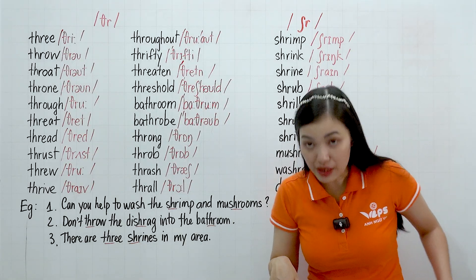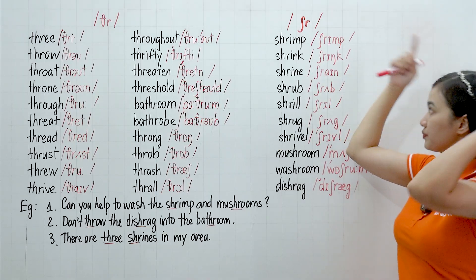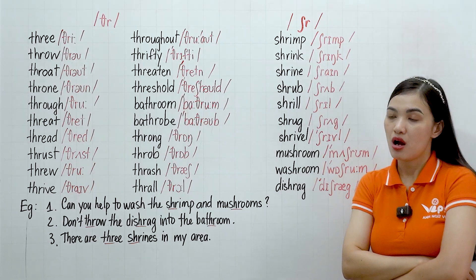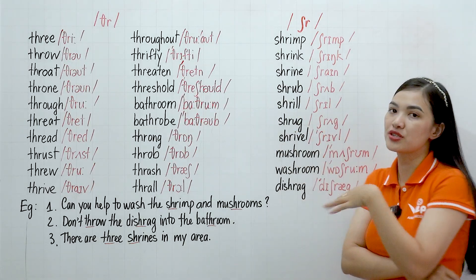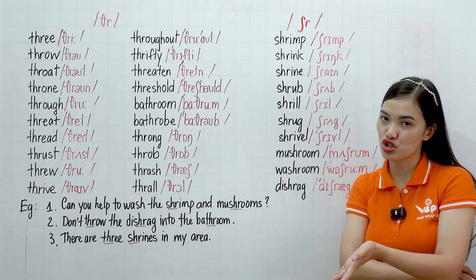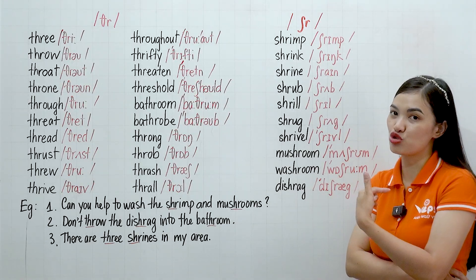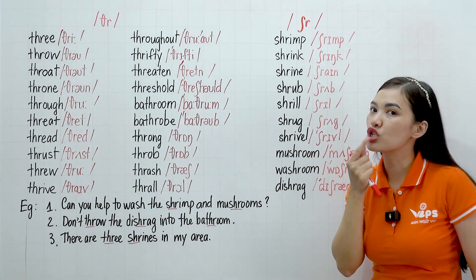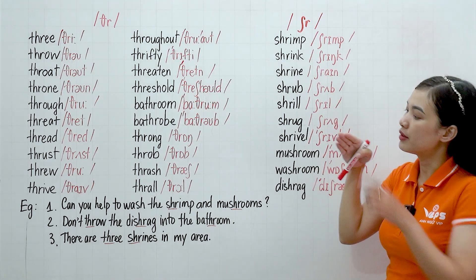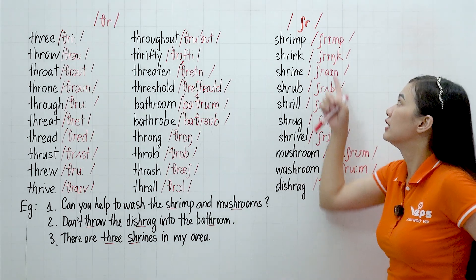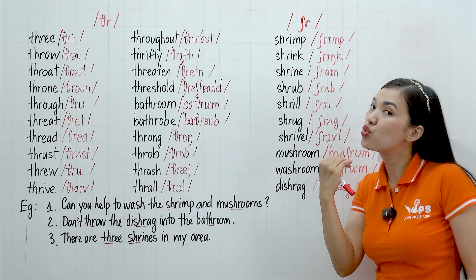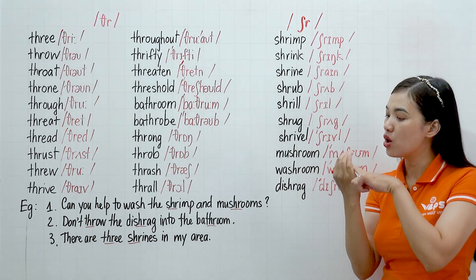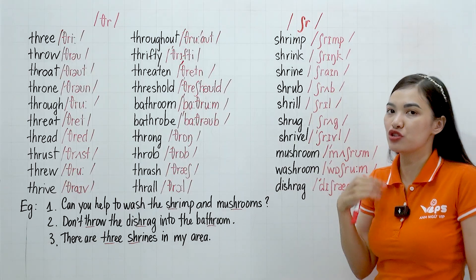And we go to the last one — this is a different one. This is SHR. Remember when S and H go together we usually pronounce 'shh.' And SHR — shh, and now the R. Shh, shh. Now the rim of your tongue — shh, and R, R, R. Okay — so we have shh + R.